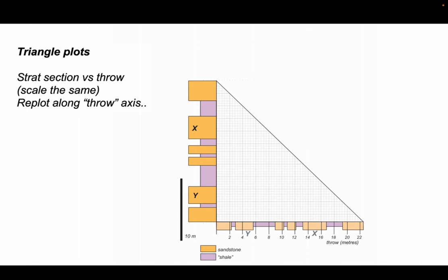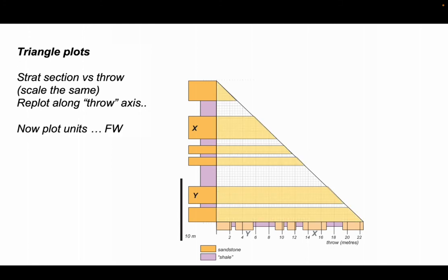The next thing we want to do is plot the stratigraphy as though we were plotting the footwall. We've just extrapolated our stratigraphy horizontally across the diagram. Now we're going to plot the offsets of these units linking to the throw axis.